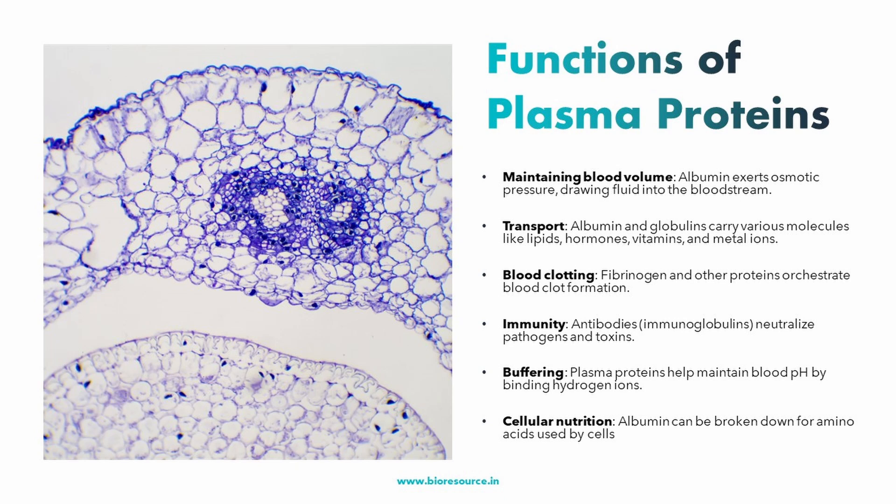Another important function is the blood clotting cascade. When you get a cut, a special team of proteins springs into action to prevent excessive bleeding. Fibrinogen is one of the key players here — it transforms into fibrin, a mesh-like structure that traps blood cells and platelets, forming a clot to seal the wound.